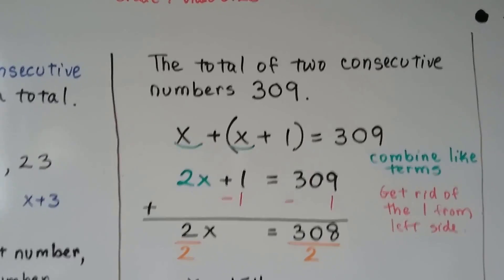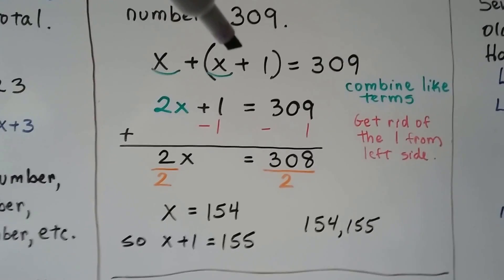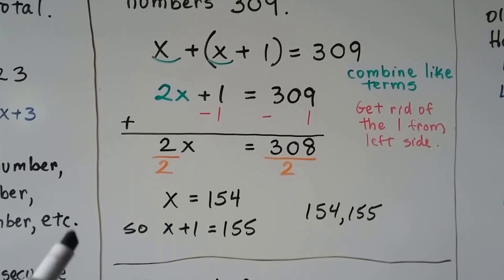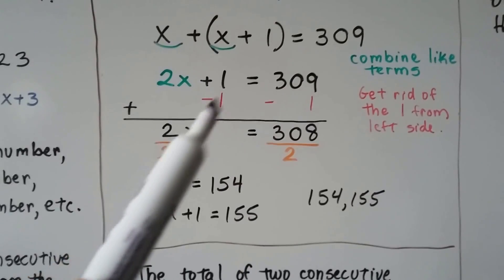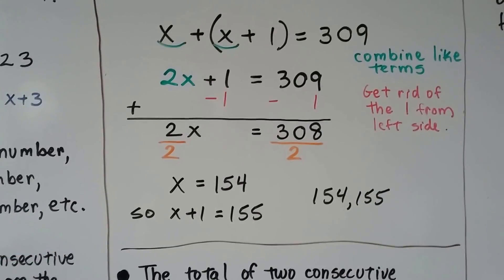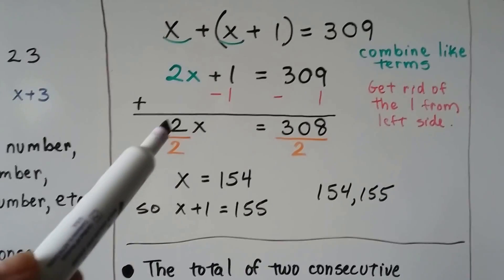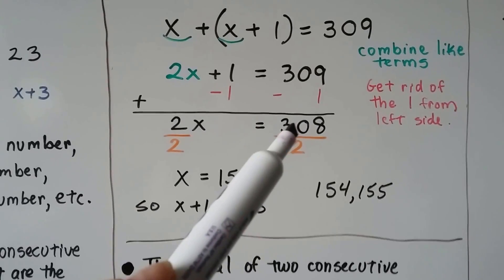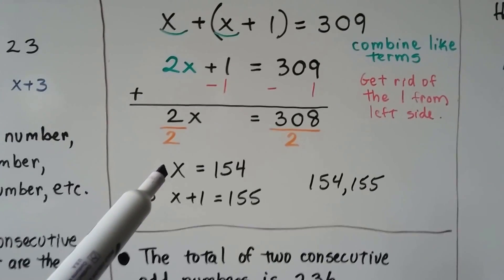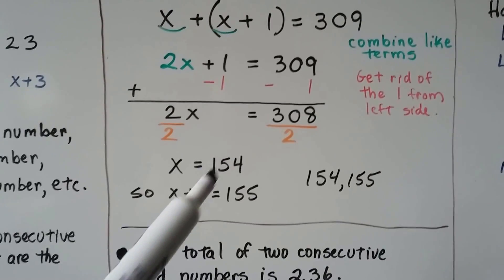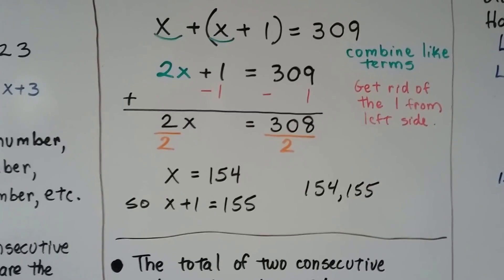The total of two consecutive numbers is 309. We have x plus (x plus 1) equals 309. Combining like terms gives us 2x plus 1 equals 309. We add negative 1 to both sides, giving 2x equals 308. Dividing both sides by the coefficient 2 gives us x equals 154. So x plus 1 must be 155, and those are our two consecutive numbers that total 309.